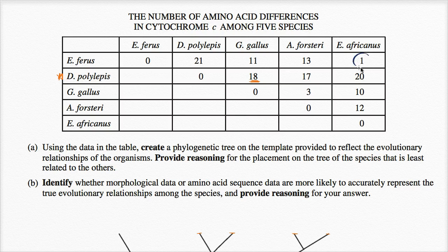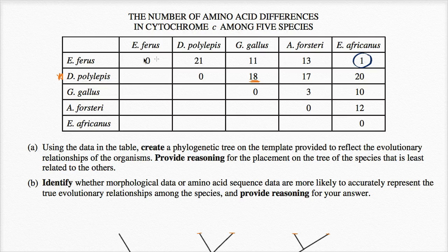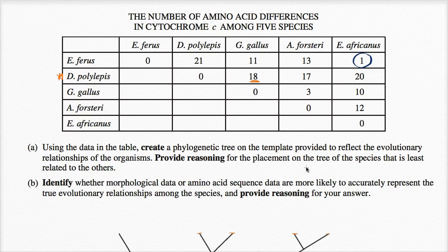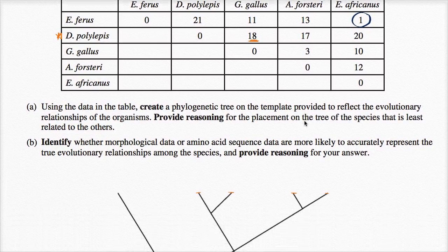So, you see here, there's only one amino acid difference, or one sequence, one amino acid difference between cytochrome C and E. ferrous and E. africanus. So, I would say that these are fairly closely related. They probably share an ancestor not too far in the distant past. So, let me write E. ferrous and E. africanus.